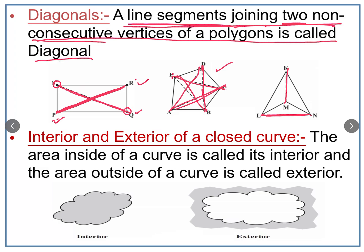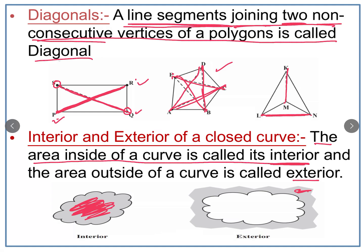Next, interior and exterior of a closed curve. As the name suggests, the interior means the area inside the curve, while the exterior means the area or region outside the curve. The area inside a curve is called its interior, and the area outside the curve is called its exterior region.